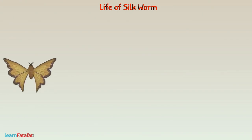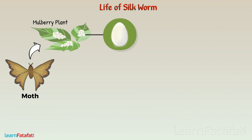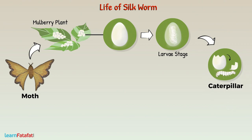A female silk moth lays hundreds of eggs at a time. When the young organism growing in the egg reaches the larva stage, it comes out of the egg. Now the organism is known as a caterpillar, or also called a silkworm.